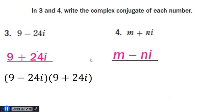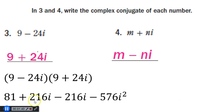And then we do the distribution, and we get 81 from 9 times 9, positive 216I from 9 times positive 24I, so on and so forth. Once we carry out this multiplication, we get 81 plus 216I minus 216I minus 576I squared. This comes from negative 24I times positive 24I. 24 times 24 is 576. I times I is I squared.